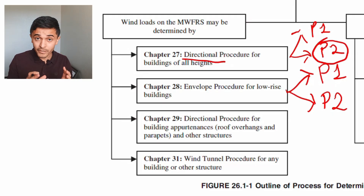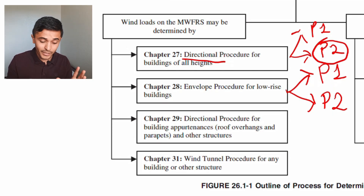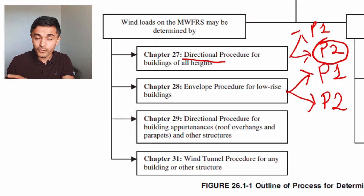After that's all done, we're going to have one building that is possible to derive wind loads for using all four different methods, and we'll see how they all compare. Today we're essentially comparing three different methods. I was pretty surprised to find that there is a major discrepancy when you go from the envelope procedure to the directional procedure.